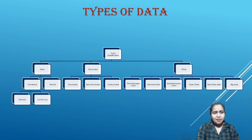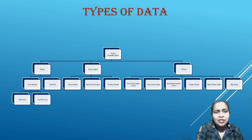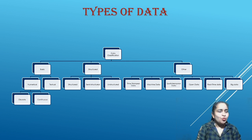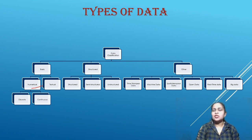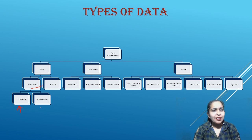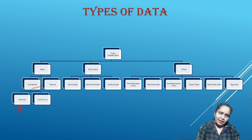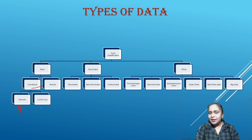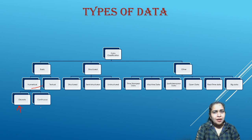Now the types of data — you can see the chart I have drawn. There are three categories: basic, structure, and other data, each further divided into subcategories. Basic data is divided into numerical and textual. Numerical data is further classified into discrete and continuous. Numerical data consists of numbers like 0, 1, 2, 2.5, 6.5. Textual data consists of characters and symbols.